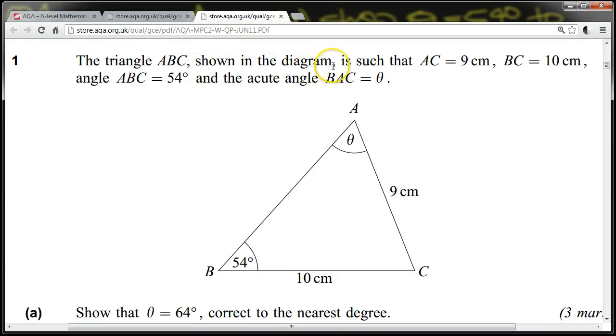The triangle ABC shown in the diagram is such that AC is 9, BC is 10, ABC is 54 degrees, and the acute angle BAC is theta. Show that theta is 64 degrees, correct to the nearest degree.